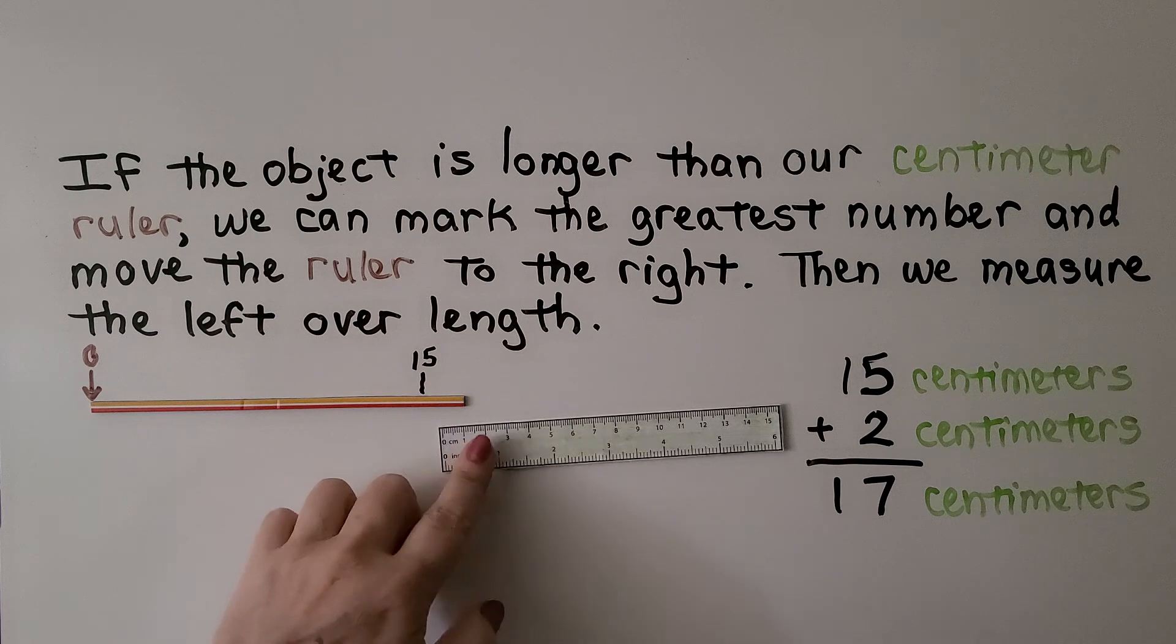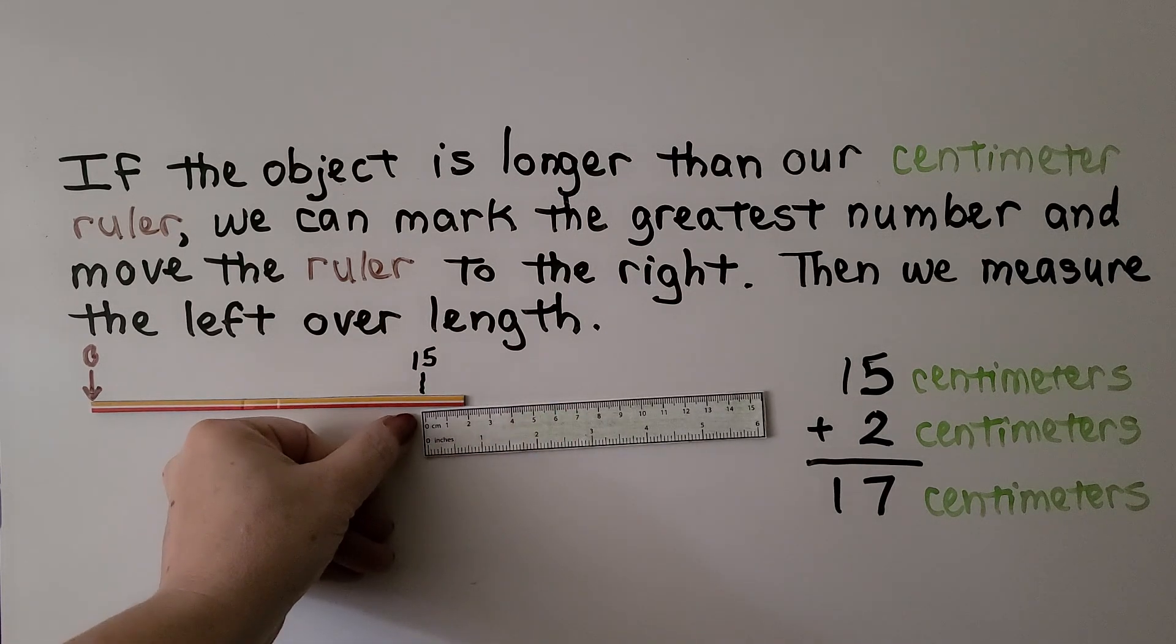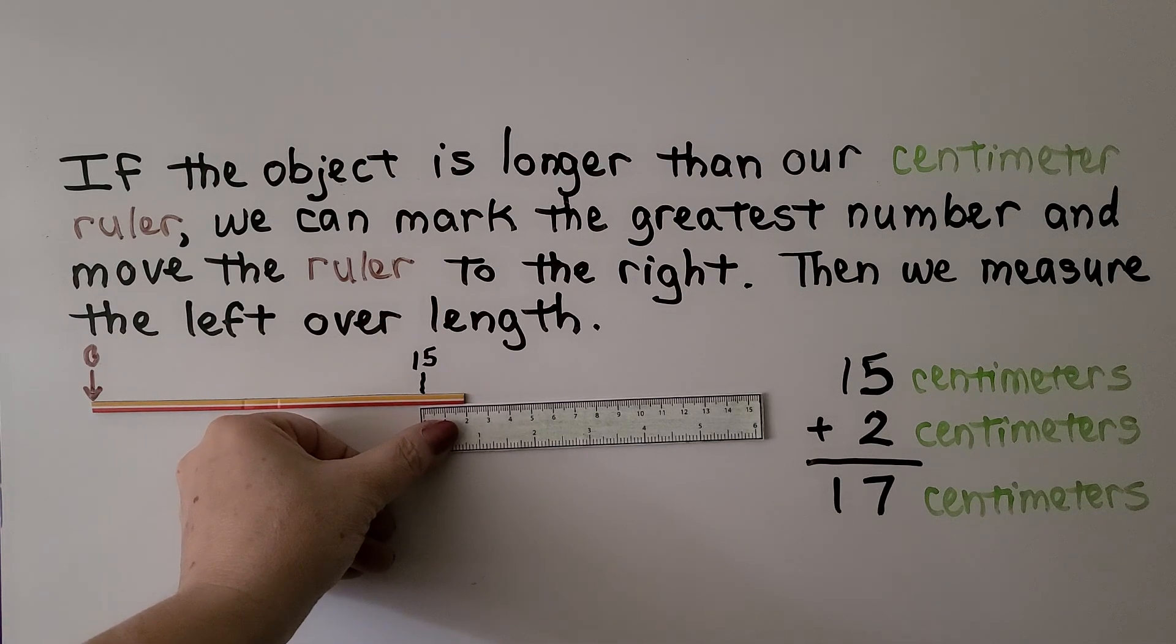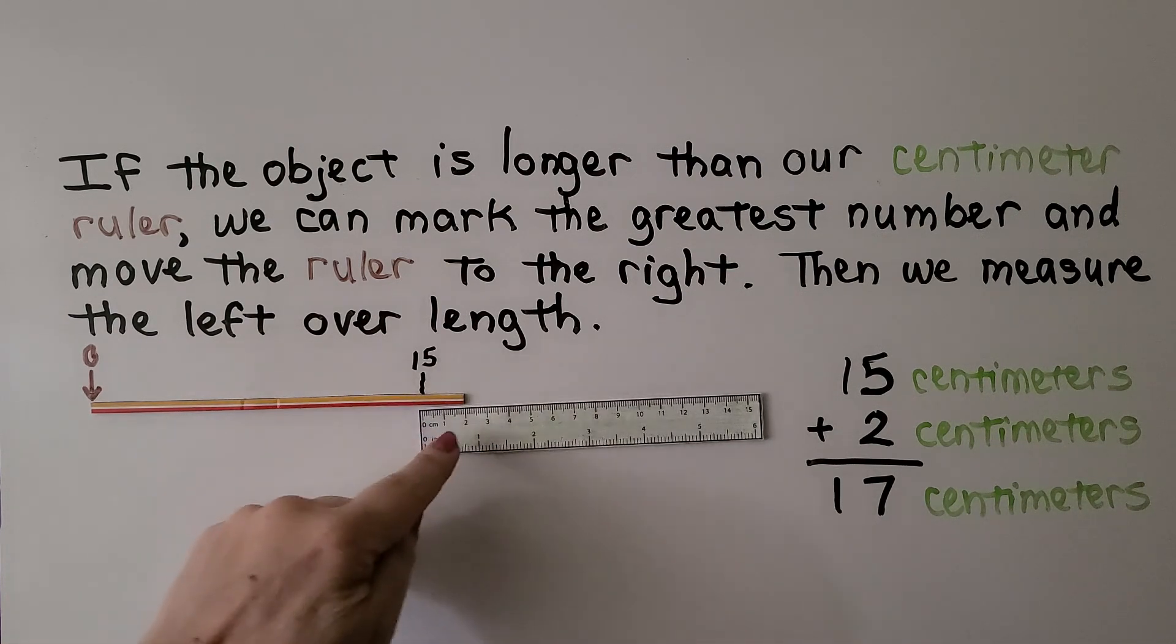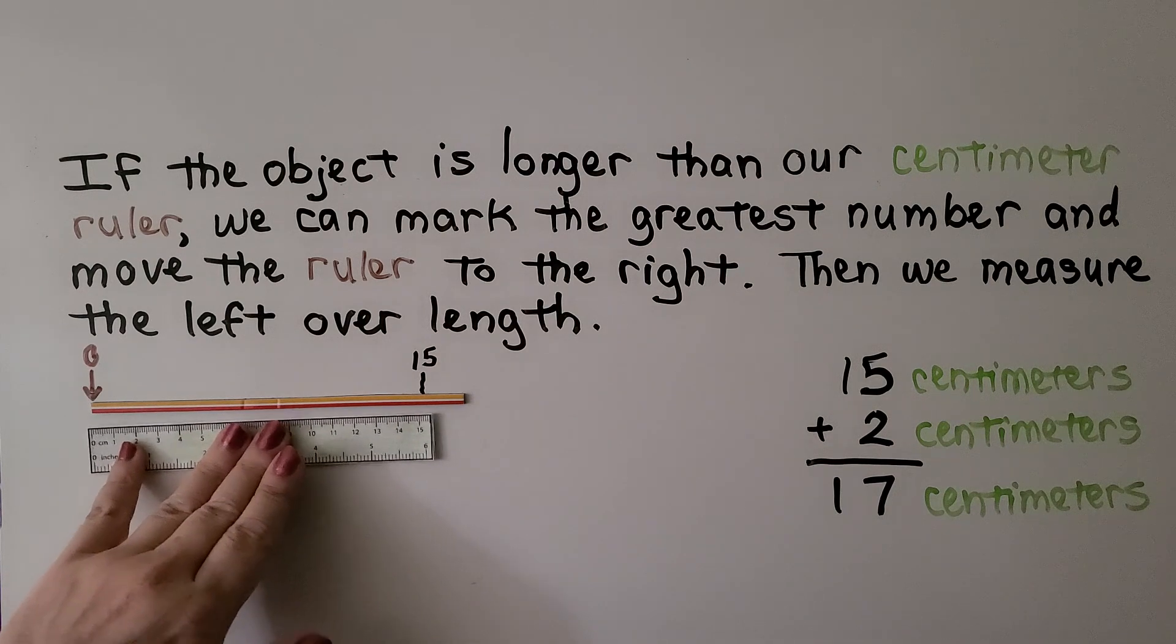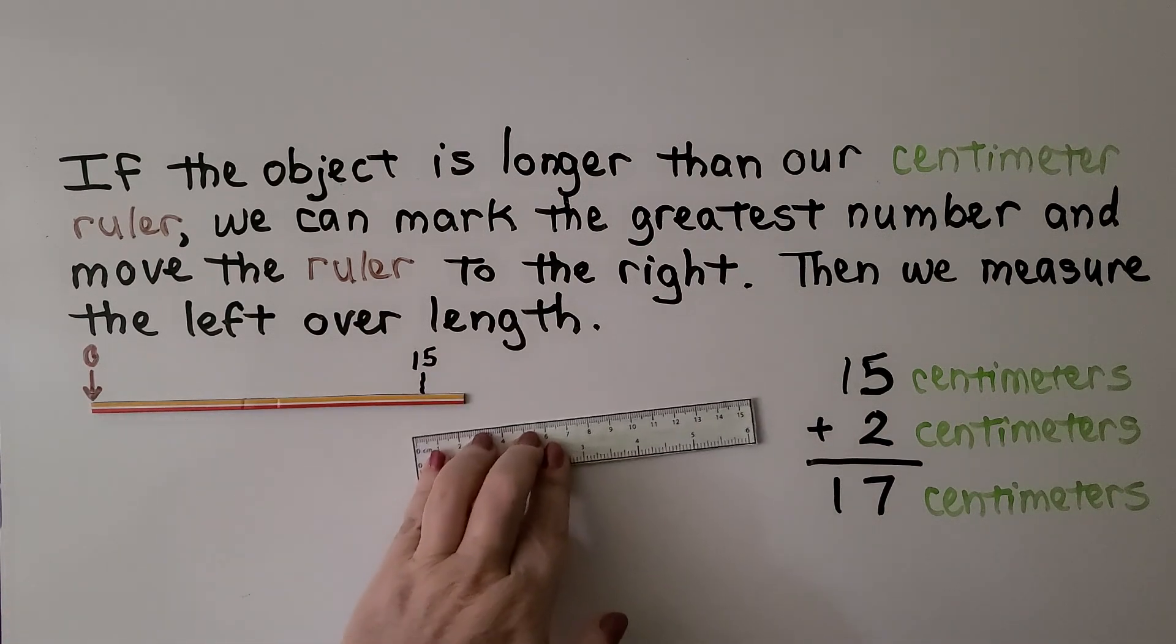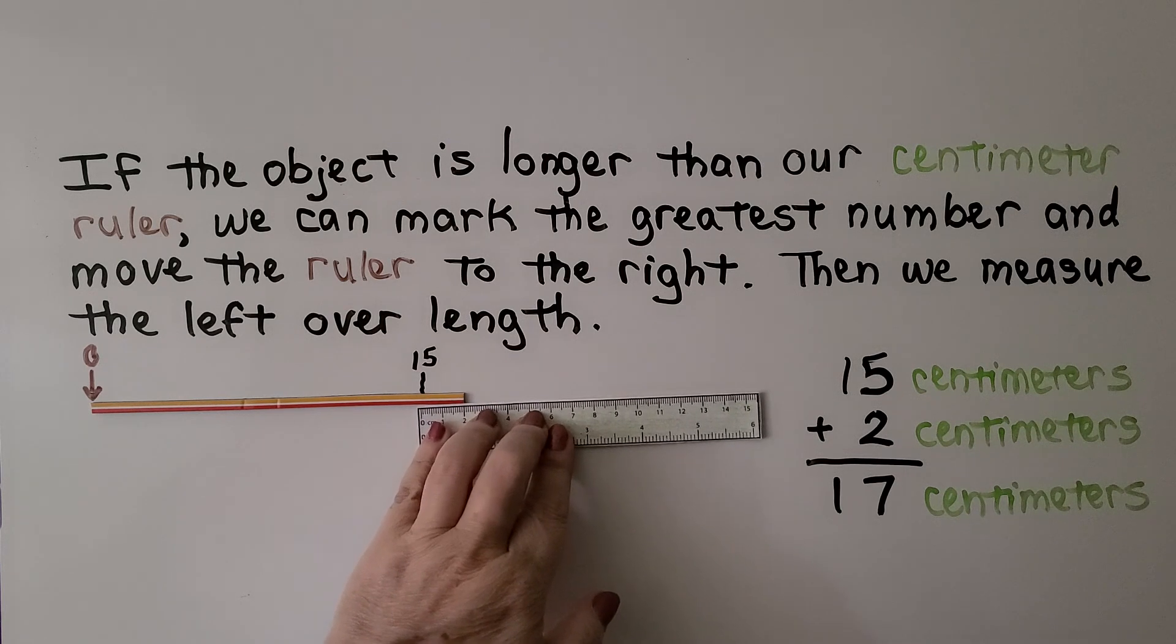And we move the ruler to the right, we measure again. So we have 15 and we line this up with zero, our 15 mark. So we have 15 and 2 more, 15 plus 2, that's 17 centimeters. We measured it, we marked the greatest mark that we could, then we moved our ruler over, measured what was left over, and we added them together.